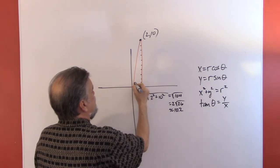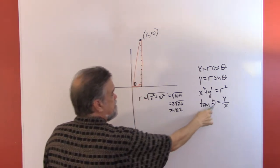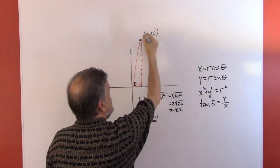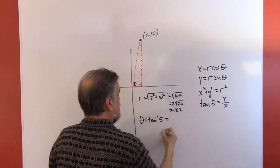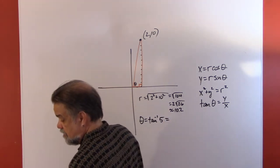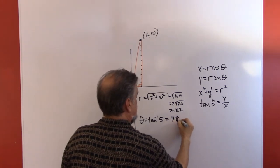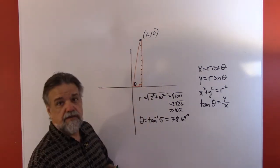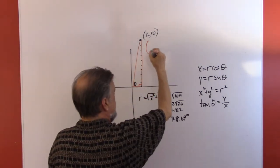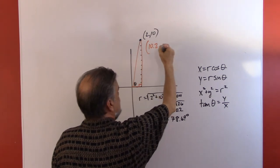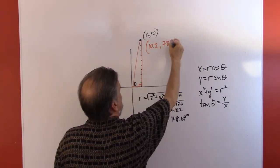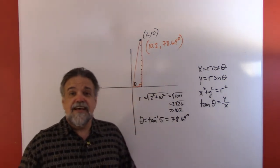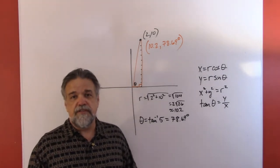For theta, the tangent of theta equals y over x, so theta is the inverse tangent of 10 over 2, which is 5. The inverse tangent of 5 is 78.69 degrees. So the point (2, 10) in Cartesian coordinates can be written as (10.2, 78.69°) in polar coordinates.